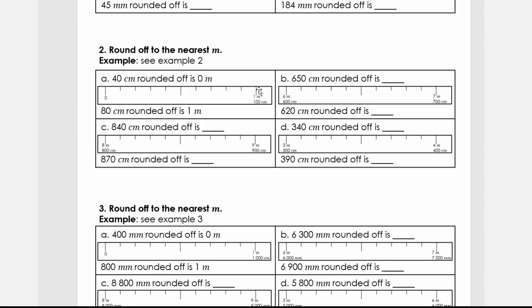Here, if I got 650, this is 500, 600, 650 will be there in the middle. If I round it off to the nearest meter it will be seven meters, or if I rounded off to the nearest centimeters it will be 700 centimeters.